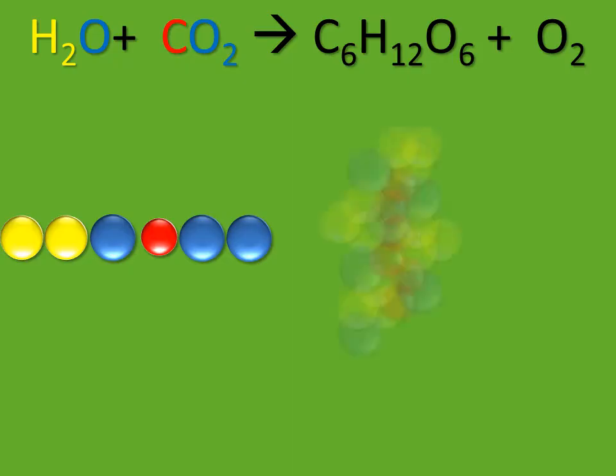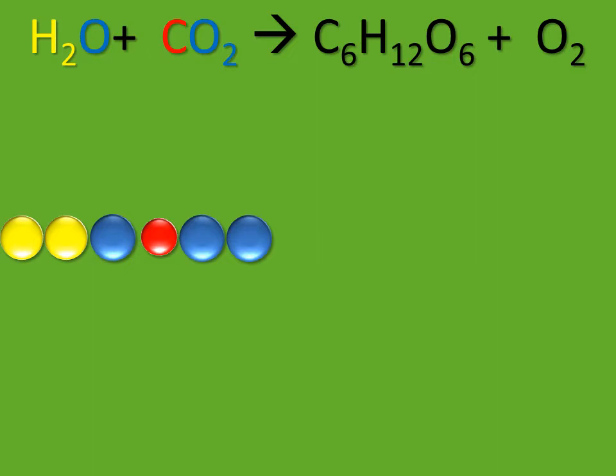Now, the plant needs to make this large glucose molecule, but it doesn't have enough atoms yet. So, to help make that glucose molecule, the plant takes in more water and more carbon dioxide.